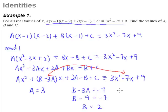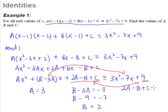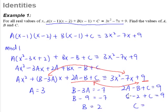For the last part, the constant terms are the same, so 2A - B + C = 9. Since we already know A = 3 and B = 2, we substitute in to get 6 - 2 + C = 9, so C = 9 - 4 = 5. Therefore A = 3, B = 2, and C = 5.